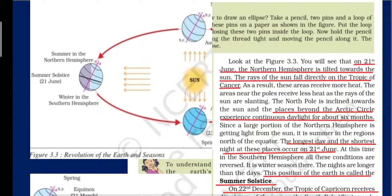All the parallel lines you see are the various important latitudes — the Arctic Circle, Tropic of Cancer, Tropic of Capricorn, and Antarctic Circle. The rays of the sun fall directly on the Tropic of Cancer, which is in the northern hemisphere, so areas near the Tropic of Cancer receive more heat. The poles are away from the sun and receive slanting sun rays, resulting in less heat.